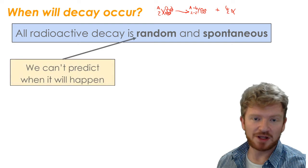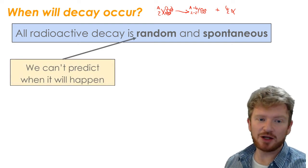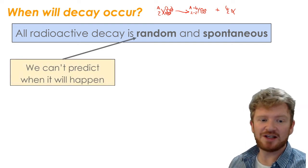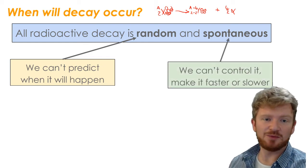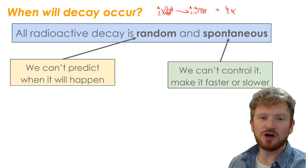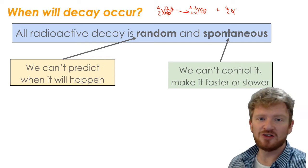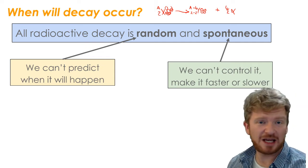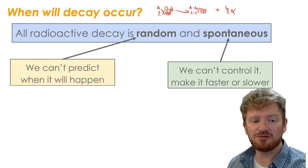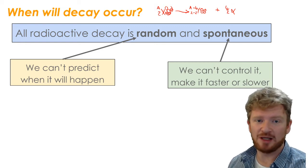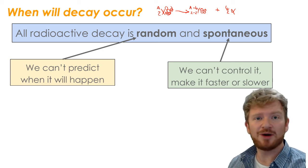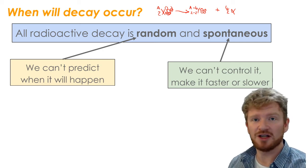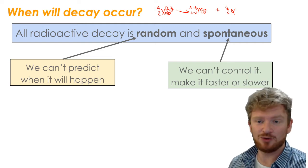So what does that mean? Random means we cannot predict when the decay is going to occur. It'll happen at any time. And spontaneous means we cannot control it. You can't force a nucleus to decay more quickly. That's quite different to chemistry, because in chemistry you can make a chemical reaction happen more quickly by putting in more heat. But it doesn't work that way with radioactive decay.